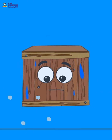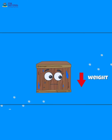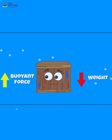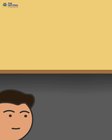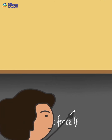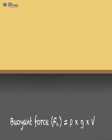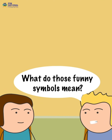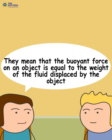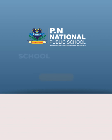It is the force that opposes the weight of the body by pushing it in the upward direction. Mathematically, the buoyant force is represented like this, where V is the volume of the displaced fluid and rho represents density. This equation states that the buoyant force on an object is equal to the weight of the fluid displaced by the object.